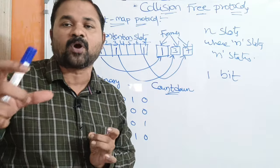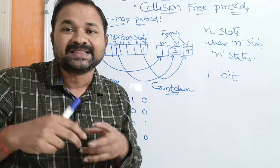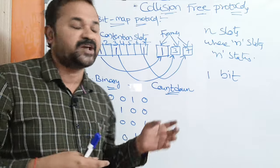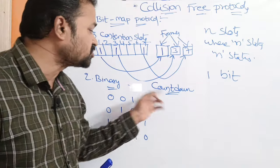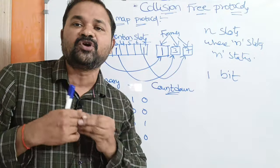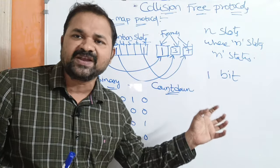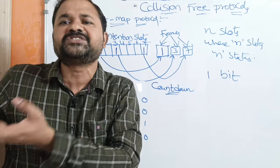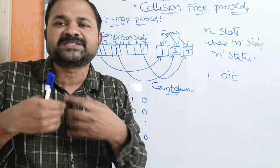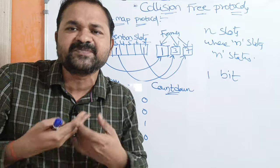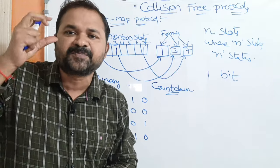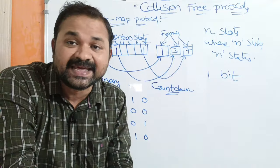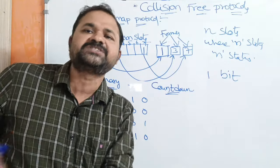In each station we must use 1 bit — either 1 or 0. If we have 1000 stations, then we need to use 1000 bits in the corresponding 1000 slots, which is a significant overhead on the protocol. In order to overcome this 1-bit-per-station overhead, we go for the second approach: the binary countdown protocol.